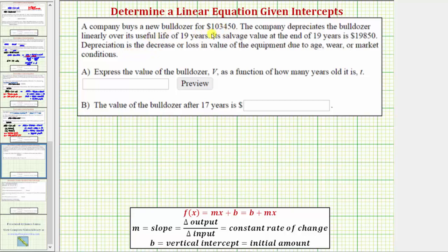A company buys a new bulldozer for $103,450. The company depreciates the bulldozer linearly over its useful life of 19 years. Its salvage value at the end of 19 years is $19,850. Depreciation is the decrease or loss in value of equipment due to age, wear, or market conditions.